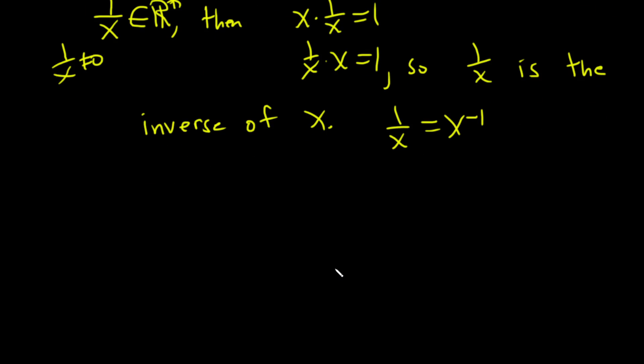Generically, if you just had a group and you had x, the inverse would be x inverse. Using multiplicative notation. Using additive notation, you would use minus x.